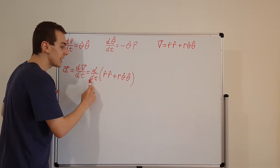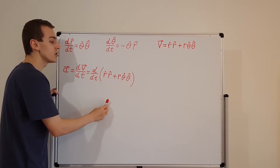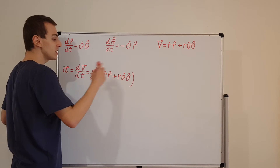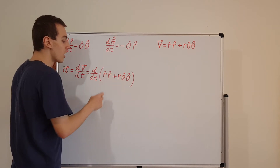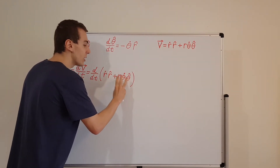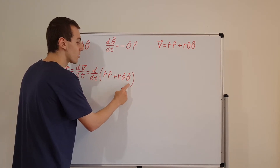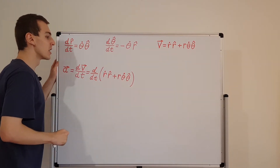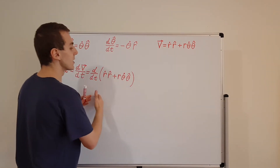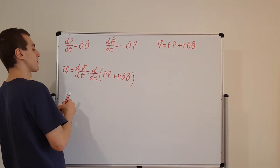Let's apply this time derivative to each of these terms. We're going to have to use the product rule for differentiation. When we use the product rule, we're going to get two terms from the first term (r-dot times r-hat) and three terms from the second term (r times theta-dot times theta-hat), because there are two and three factors respectively. Let's write down all of those terms.